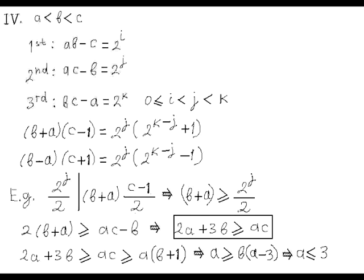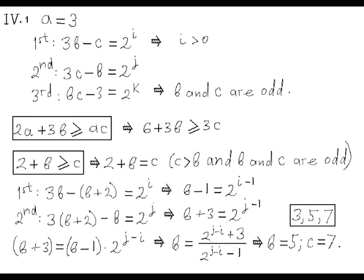From that, it follows that either B plus A or B minus A is divisible by 2 to j divided by 2. If, for example, B plus A is divisible by 2 to j over 2, then we can write that B plus A is greater than or equal to 2 to j divided by 2. If it happens to be B minus A, then B plus A is still greater than or equal to 2 to j over 2. If we substitute AC minus B for 2 to j in this inequality, we immediately obtain a very useful inequality: 2A plus 3B is greater than or equal to AC. We can transform it to the other inequality: A is greater than or equal to B times A minus 3. Based on the fact that A is less than B, the A minus 3 factor must be either 0 or negative. Hence, A must be less than or equal to 3. Since our first observation was that A cannot be equal to 1, A can be equal to 2 or 3.